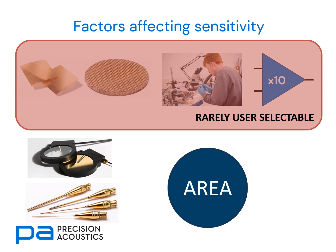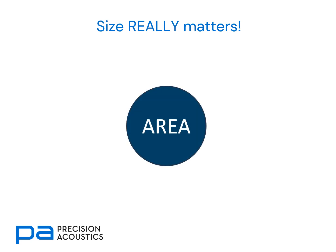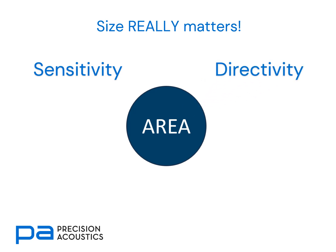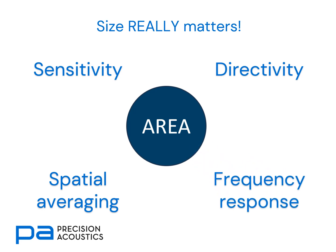But most importantly is area. The reason for this is that the voltage signal output from a hydrophone is the spatial integral of the pressure received across the area surface. Size really does matter when it comes to hydrophones, because the area constraint can affect sensitivity, but it can also affect directivity, spatial averaging, and frequency response.